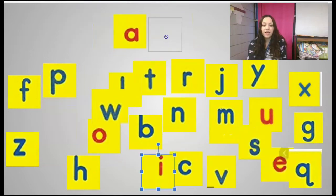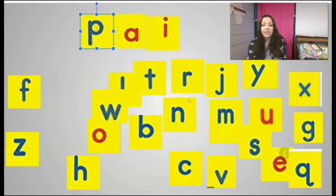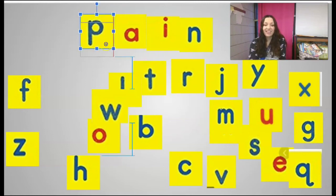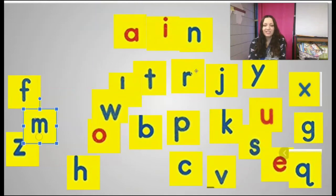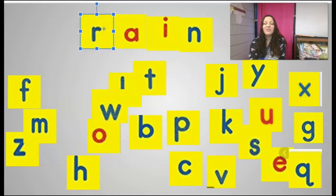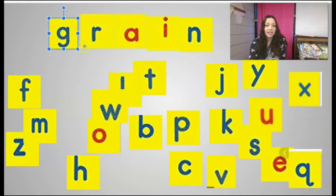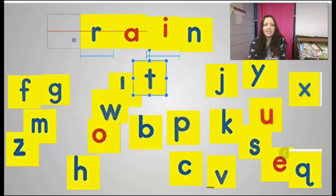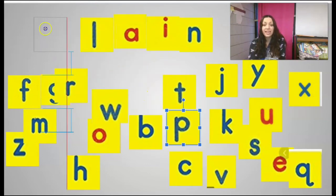Let's try a different pattern. What if I bring A-I up here? Remember, this is digraph A-I, so it makes the long A sound with silent I. I've got this digraph A-I — put P in front and N behind: 'pain'. Change the beginning to M: 'main'. Change the beginning to R: 'rain'. Add a G at the beginning to make the GR blend: 'grain'. Change the beginning to T: 'train'. Put PL at the beginning: 'plain'. You guys did an awesome job making words today.